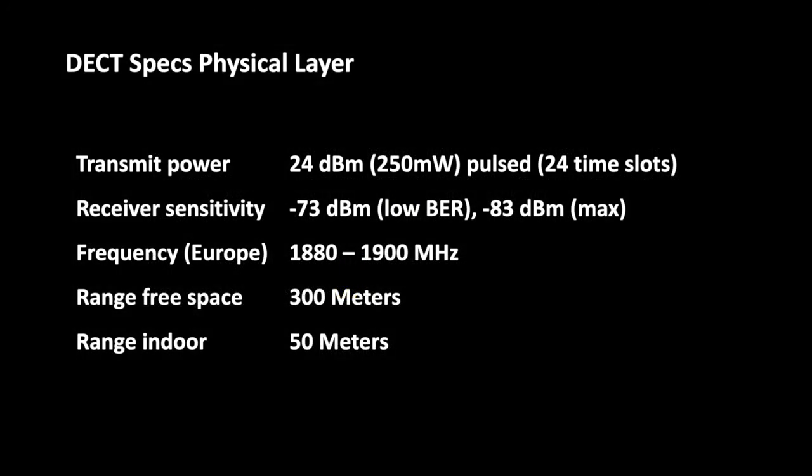I summarize the important specifications and an estimate of the range here. In Europe DECT operates in the frequency band from 1880 to 1900 MHz. The manufacturers specify a range of up to 300 m in free space and a range of up to 50 m in buildings.